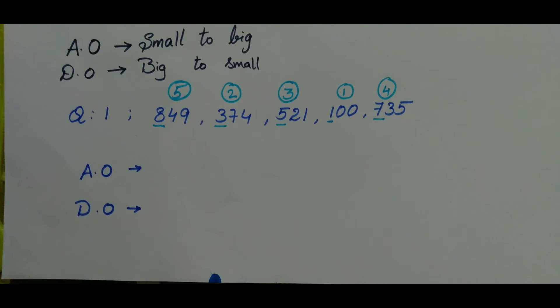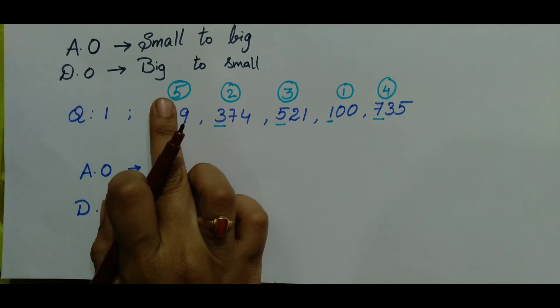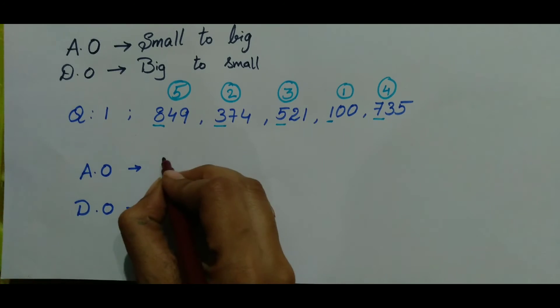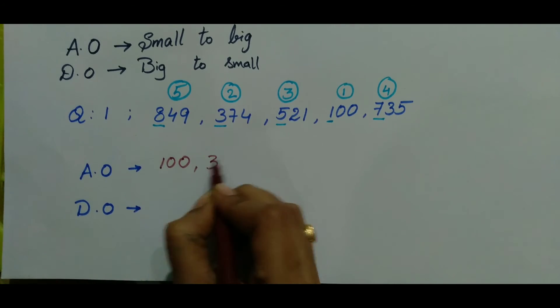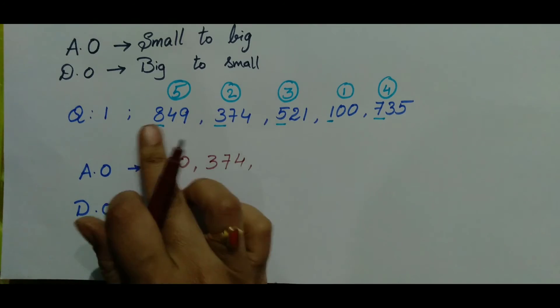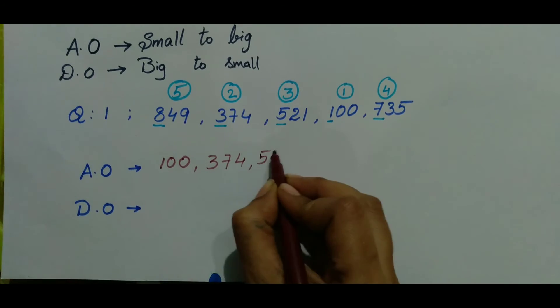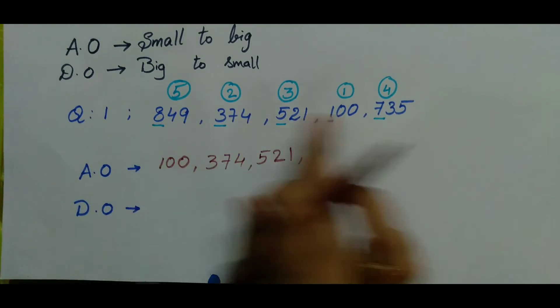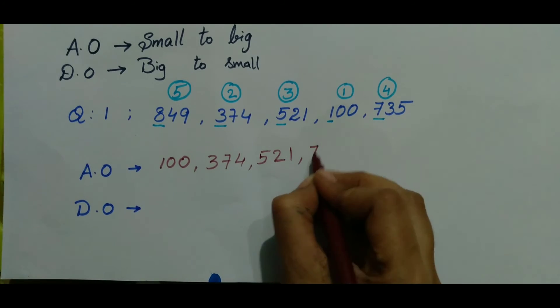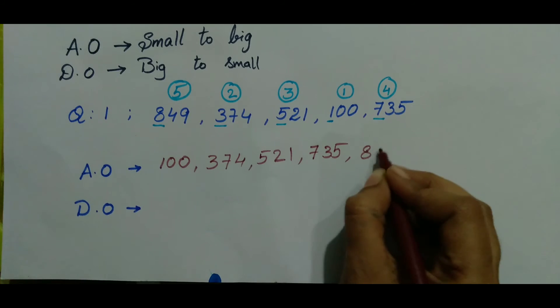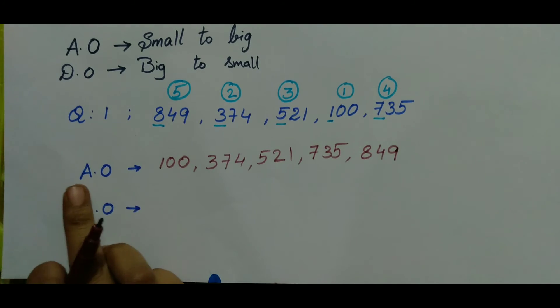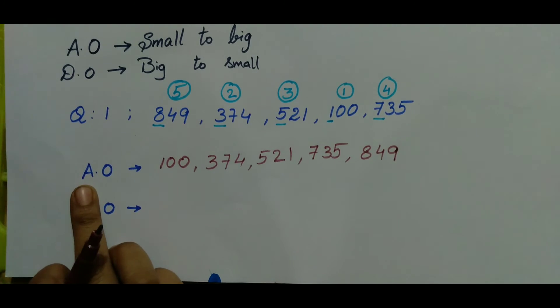the ascending order is from 1 to 5. Now, we will write 100 in the first position. After that, 374. And after, 521. Next, 735. At the last, 849 is the wanted ascending order.